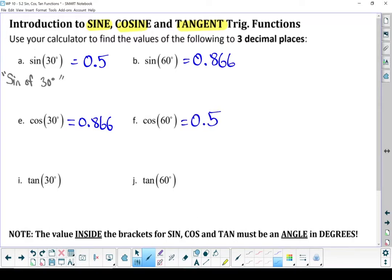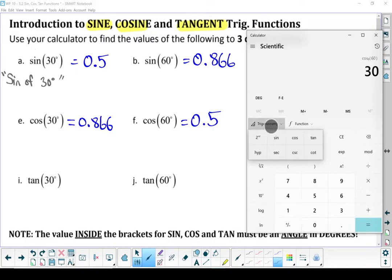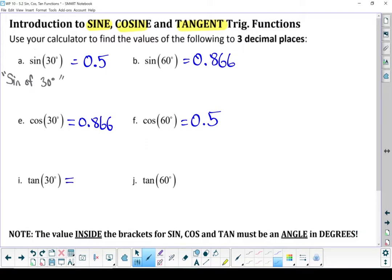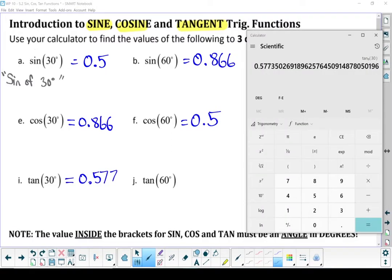Works the same way. Tan of 30 degrees. So I type in my 30. Go hit my tan button. 0.577. And tan of 60 degrees. 60. Hit my tan button. 1.732.